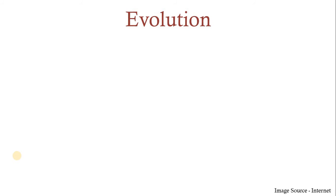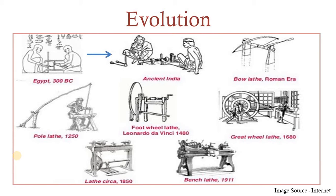First we will see the evolution of lathe machine. In this picture you will see how the evolution started from Egypt in ancient 300 BC to ancient India — how the lathe machine evolved. The lathe machine is the oldest machine tool. This device was developed through centuries, and in the year 1797, Henry Maudslay, an Englishman, designed the first screw-cutting lathe, which is the forerunner of the present-day high-speed heavy-duty production lathe.